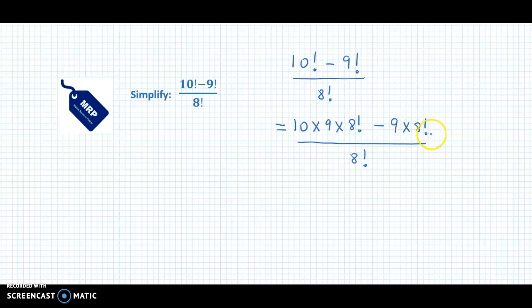Now we have 8 factorial as a common factor in the numerator. So we take 8 factorial as a common factor. And 10 into 9, so we are left with 90 minus here we are left with 9, divided by 8 factorial.